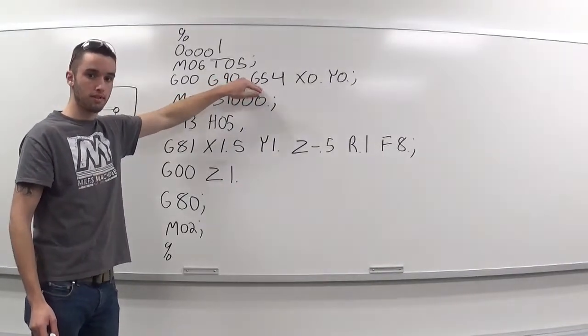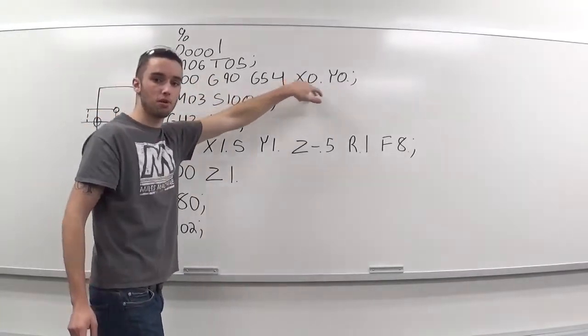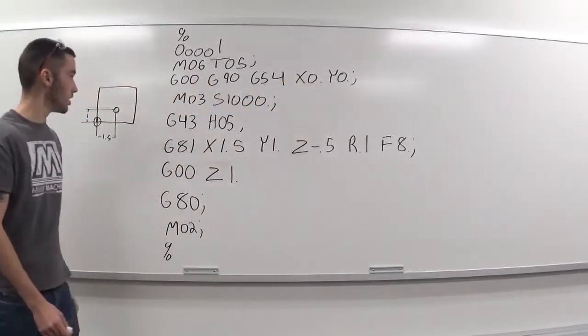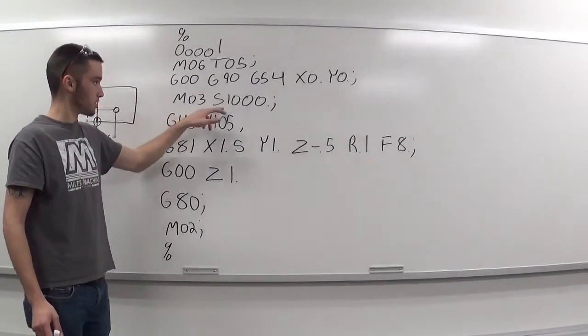G54, which is our work coordinate system we'll be using. And we'll be rapiding to an X of 0 and a Y of 0. And then we have N03, which is turning on your spindle, and we'll be using a spindle speed of 1000.